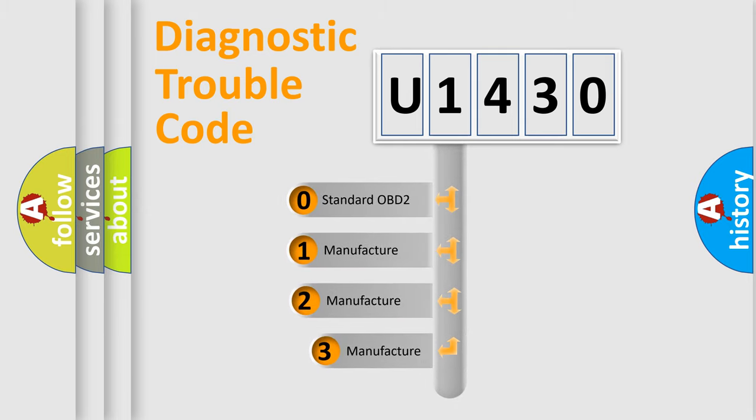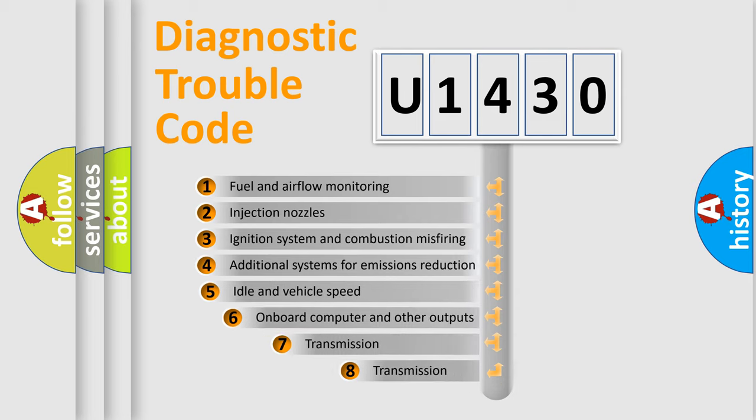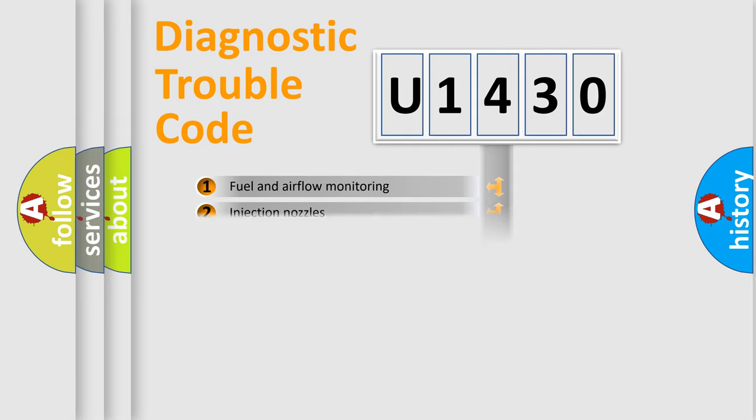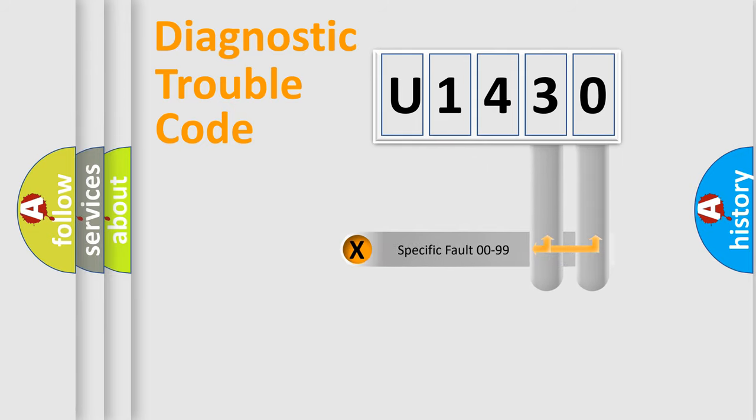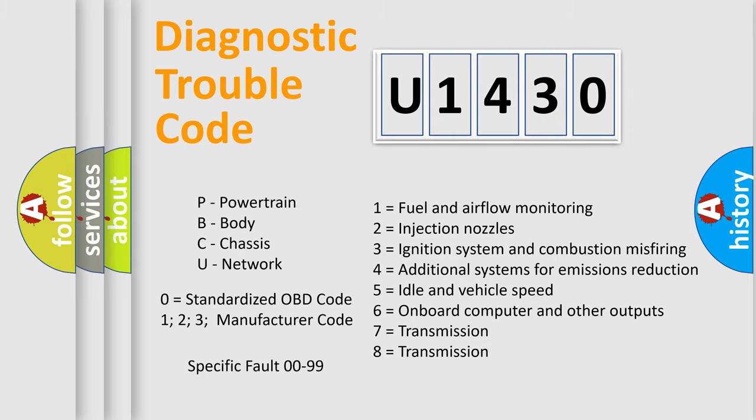If the second character is expressed as zero, it is a standardized error. In the case of numbers 1, 2, or 3, it is a manufacturer-specific error. The third character specifies a subset of errors. The distribution shown is valid only for the standardized DTC code. Only the last two characters define the specific fault of the group. Let's not forget that such a division is valid only if the second character code is expressed by the number zero.